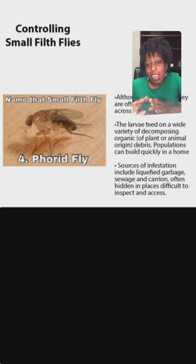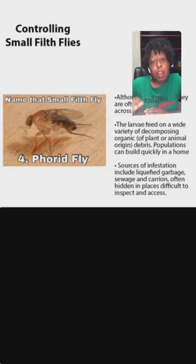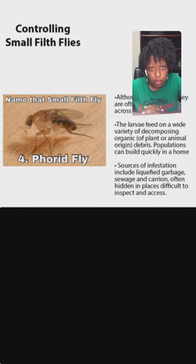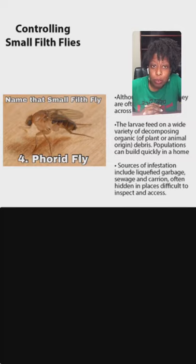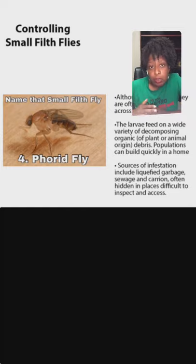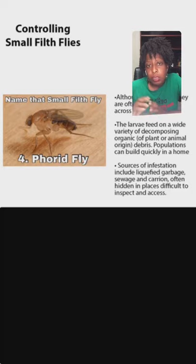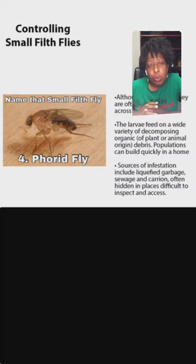These flies are annoying because while they're capable of flying, what they do is scuttle across surfaces. If you see a tiny fly constantly crawling, it's probably a phorid fly — not a fruit fly. If it's not attracted to fruit but instead to garbage and things like that, it's probably a phorid fly. The larvae will feed on a variety of decomposing organic matter of plant or animal origin — dead carrion, animal waste, human waste, sewage, garbage.